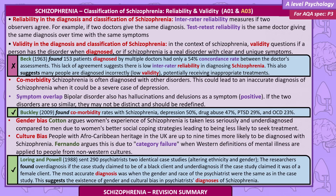Validity in the diagnosis and classification of schizophrenia questions if a person truly has a disorder when diagnosed, or if schizophrenia is a real disorder with clear and unique symptoms. Beck, 1963, found that 153 patients diagnosed by multiple doctors only had a 54% concordance rate between doctors' assessments, suggesting low inter-rater reliability. This also suggests many people are diagnosed incorrectly — low validity — potentially receiving inappropriate treatments.